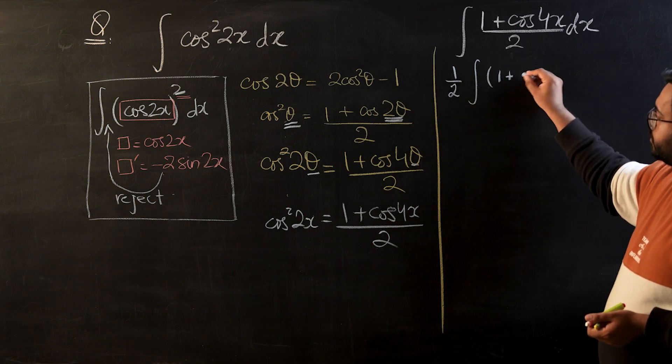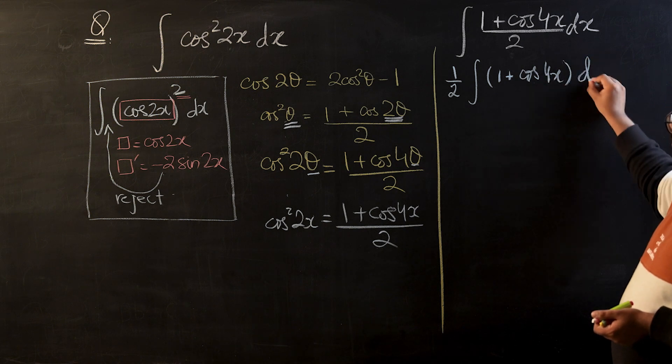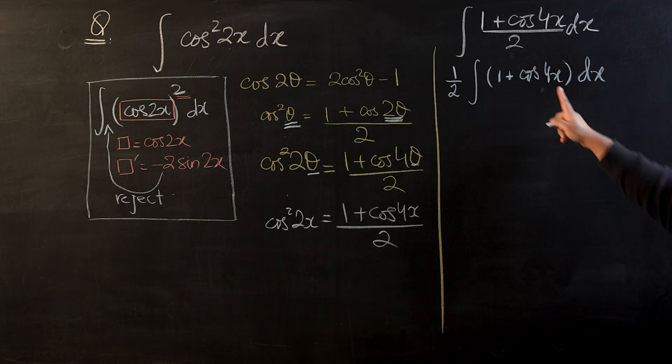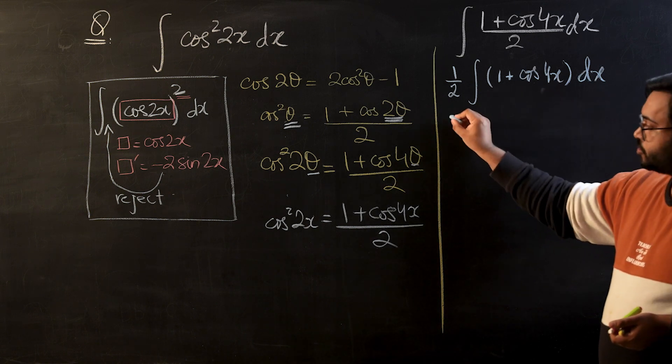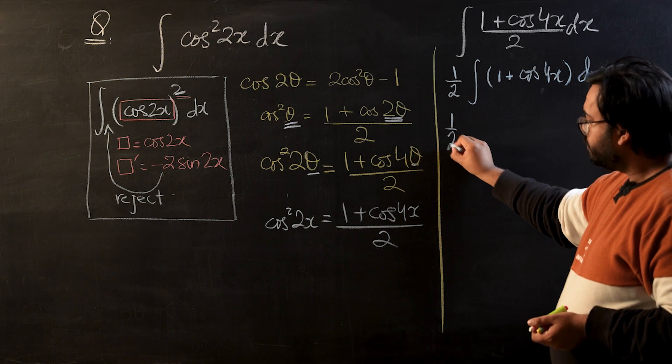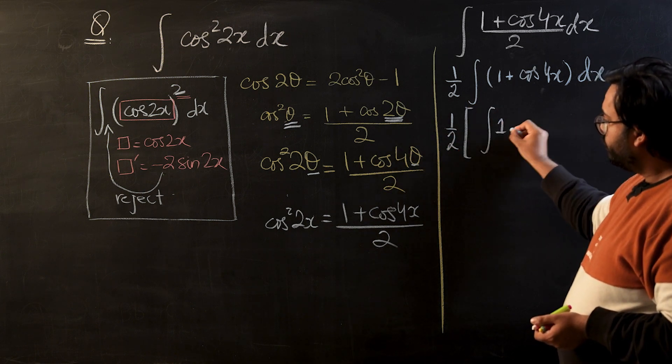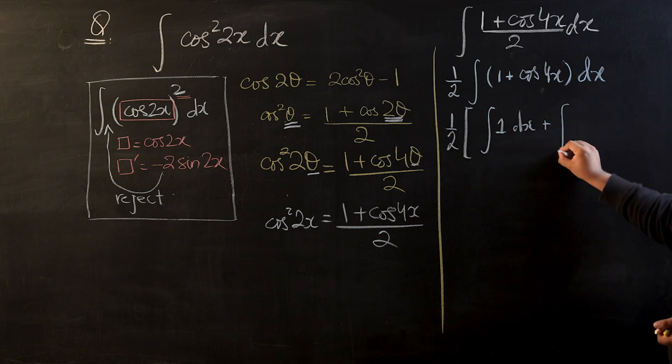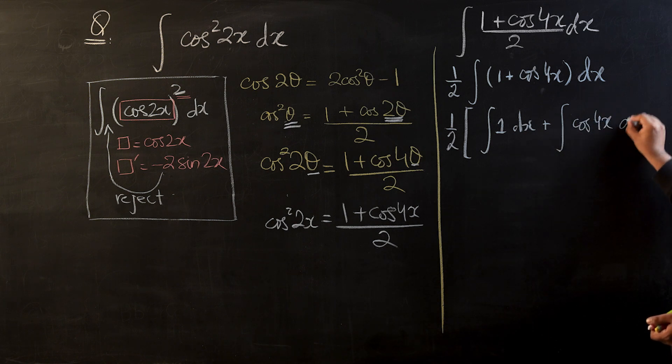We will be left with (1 + cos(4x)) 4x. Now we know that we have 2 terms which are being added or subtracted - we can integrate them separately. So let's keep this 1/2 outside and split this integral. We will have 1 integrated separately and we will have cos(4x) integrated separately.